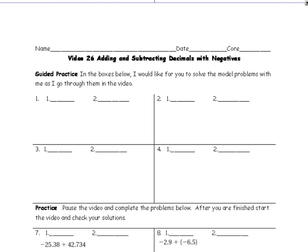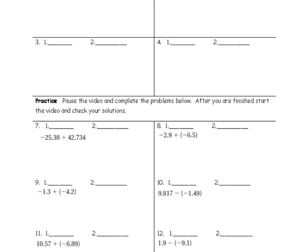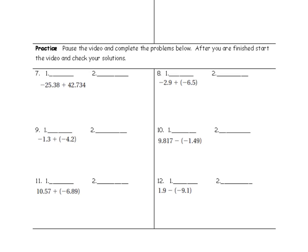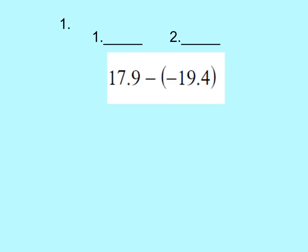We're going to do four practice problems together, and then you have six practice problems at the bottom of the page. Looking at problem number one, we have to first make a decision: is it DSD or SSS - different signs difference or same sign sum? Before we can make that decision, we have to always change our subtraction into addition to adding its opposite.